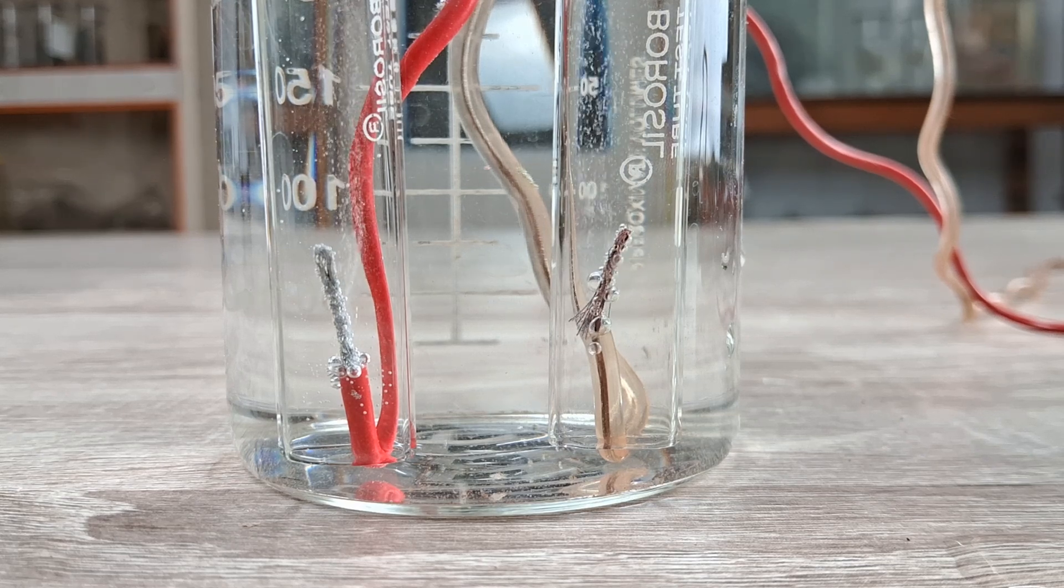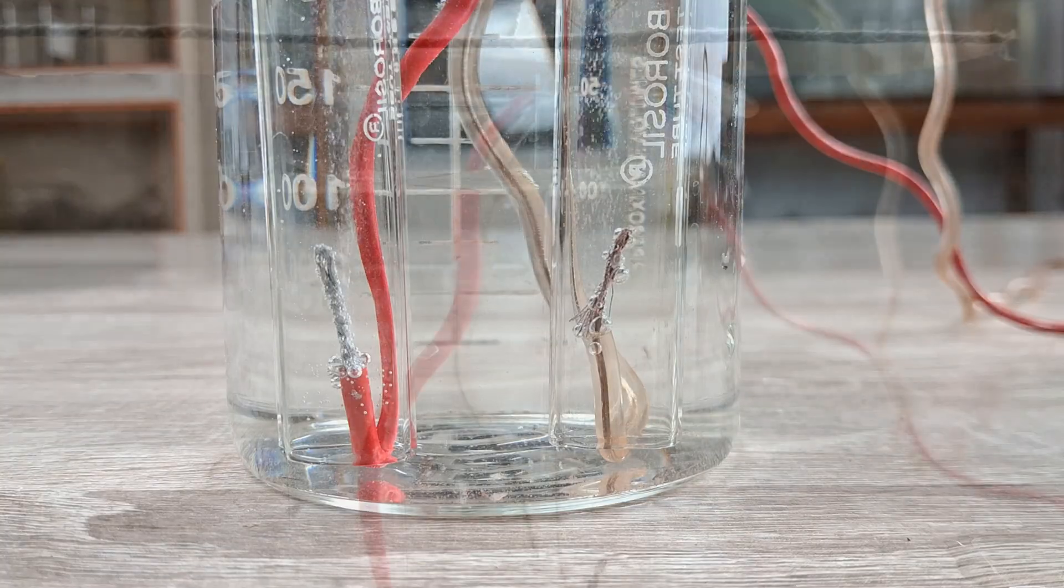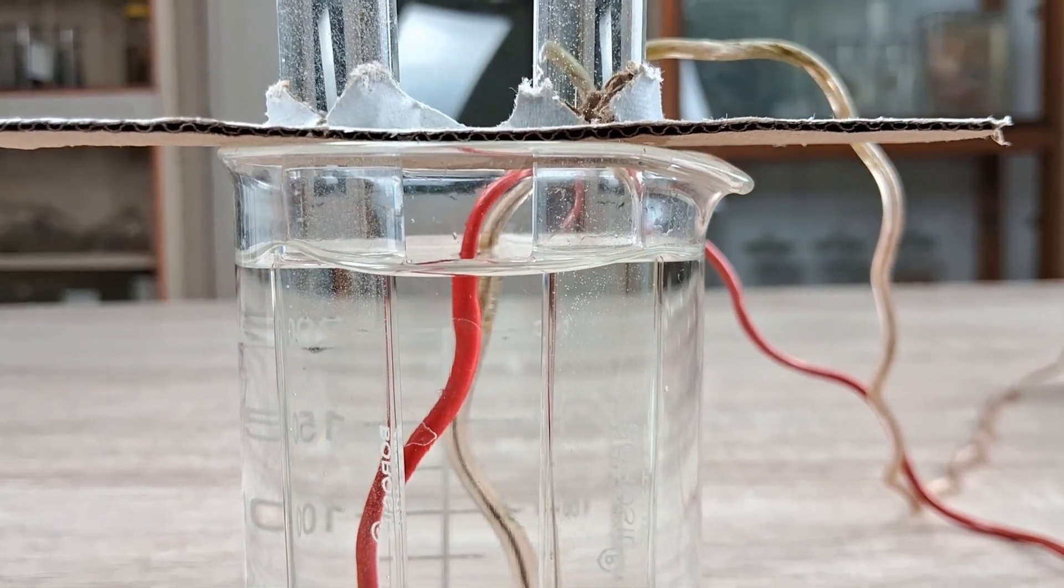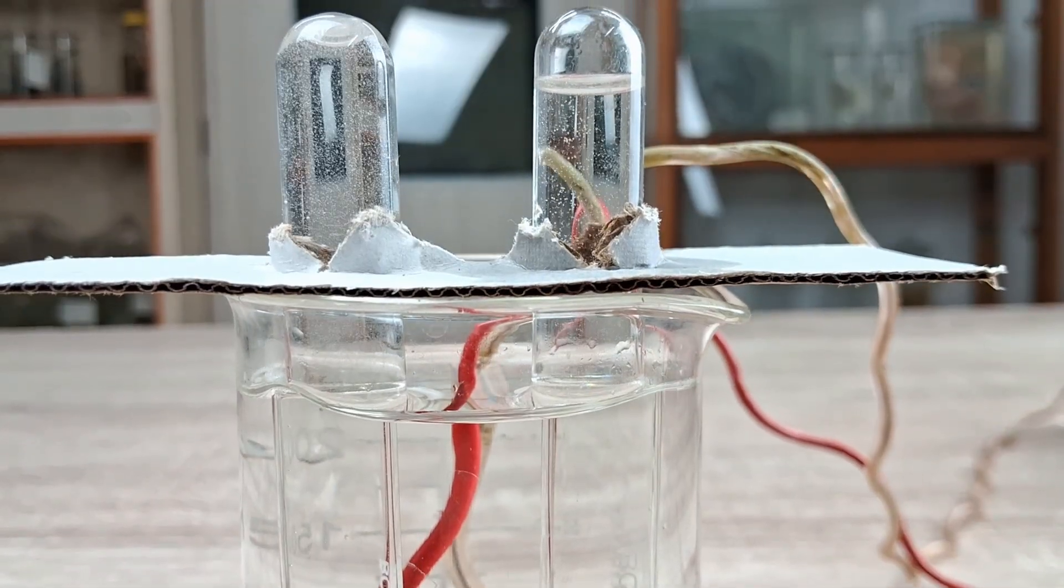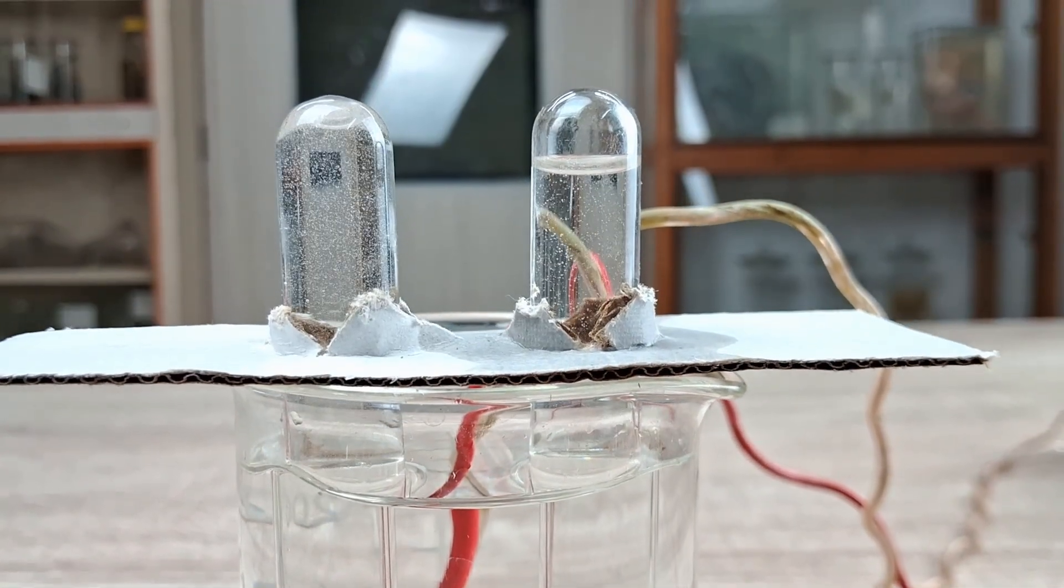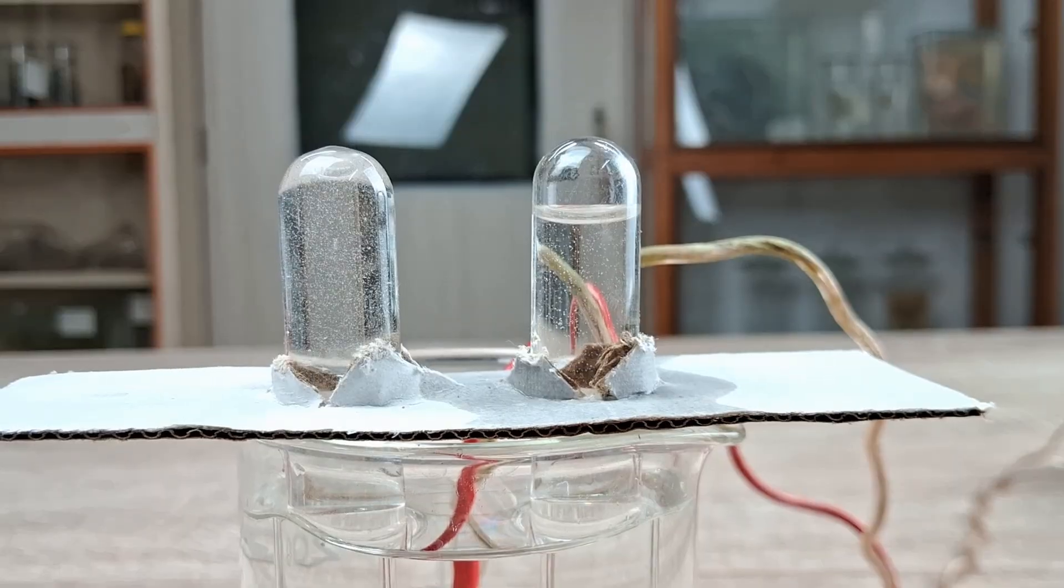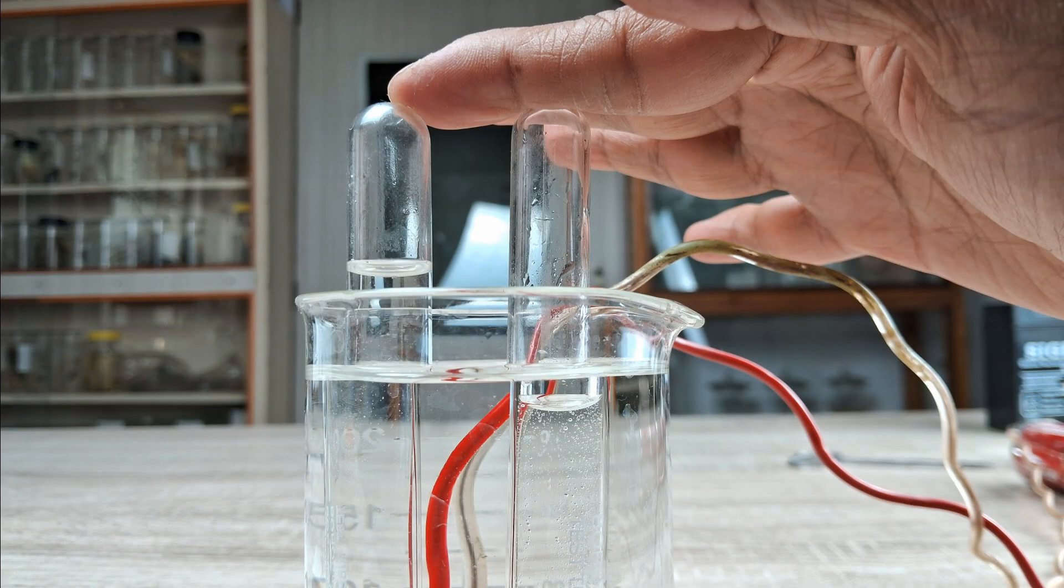If you allow the electric current to pass through the wires long enough, you will notice that the gas bubbles begin to collect in the upper ends of the two test tubes. The volume of gas that collects in the cathode tube is twice the volume that collects in the anode tube, which you can measure using a ruler.